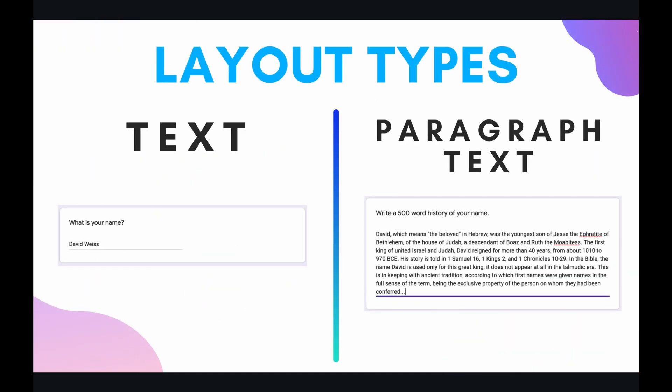There are actually two classifications for text items. One is called a text item in and of itself, shown on the left-hand side of the screen. This type of item is meant for shorter text inputs — something like a name or something that fills a single line of text. On the right-hand side of the screen, there is also something called a paragraph text item, and this is for longer answers with multiple lines of text.